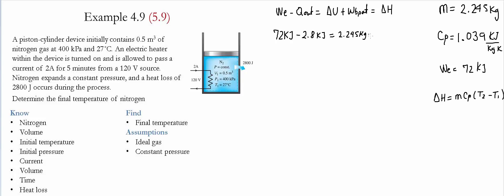Then we substitute the value of the change in enthalpy: the mass gives us 2.245 kilograms, the value for Cp is 1.039 kilojoules per kilogram Kelvin, and this is simply T2 minus T1, where T1 equals 27 degrees Celsius.